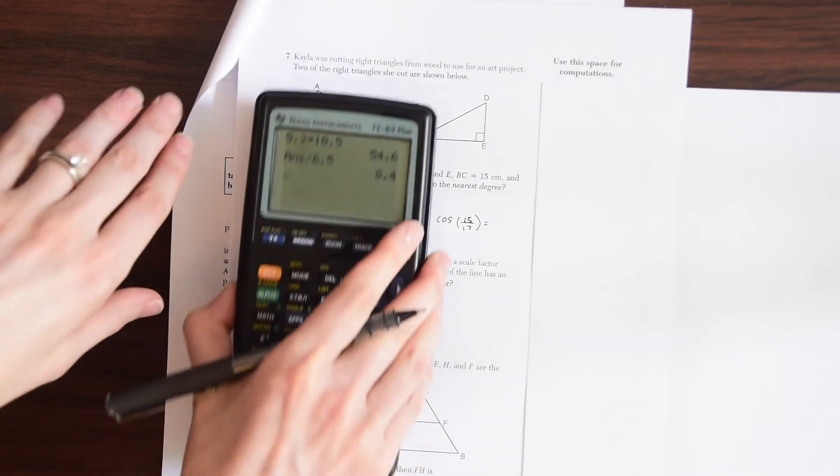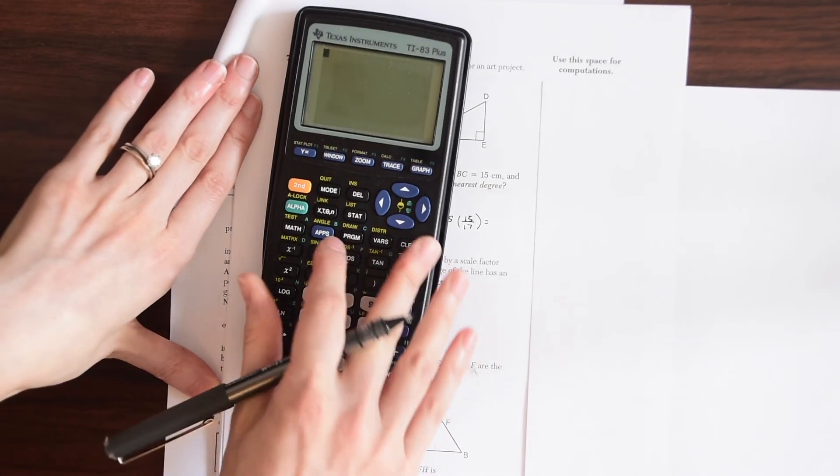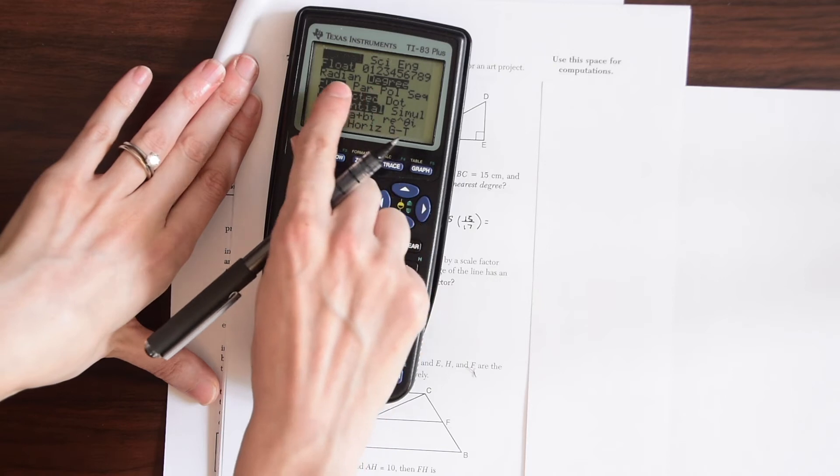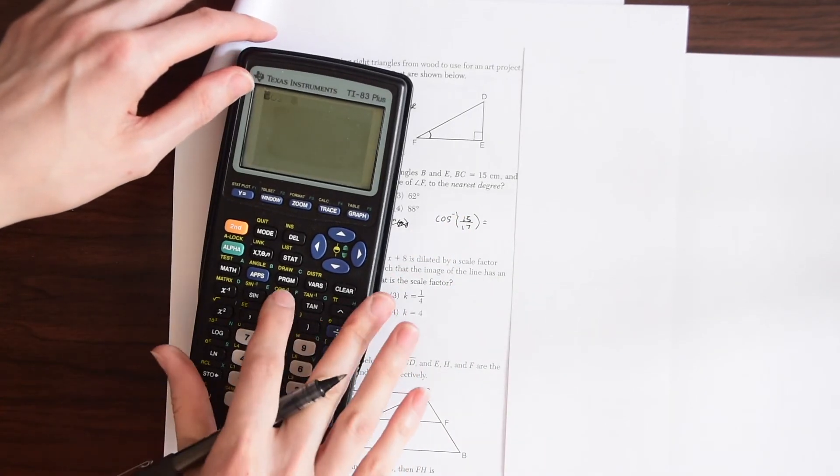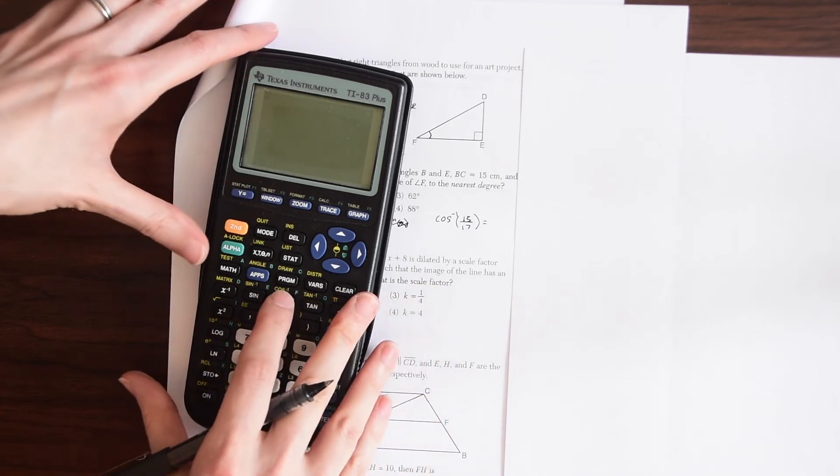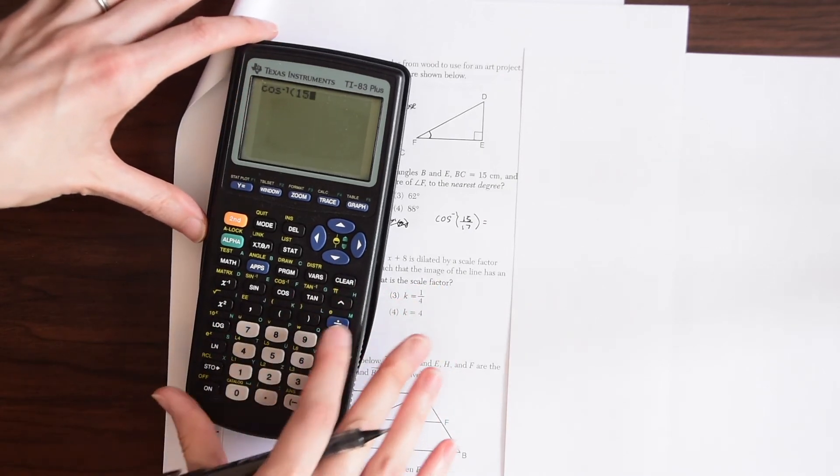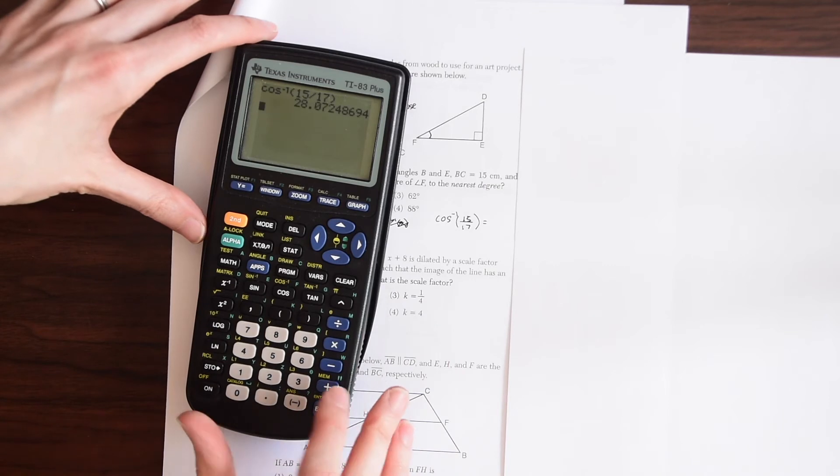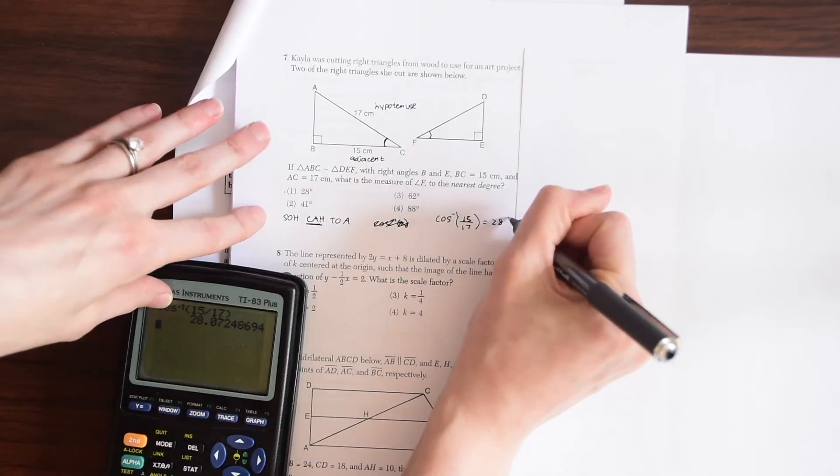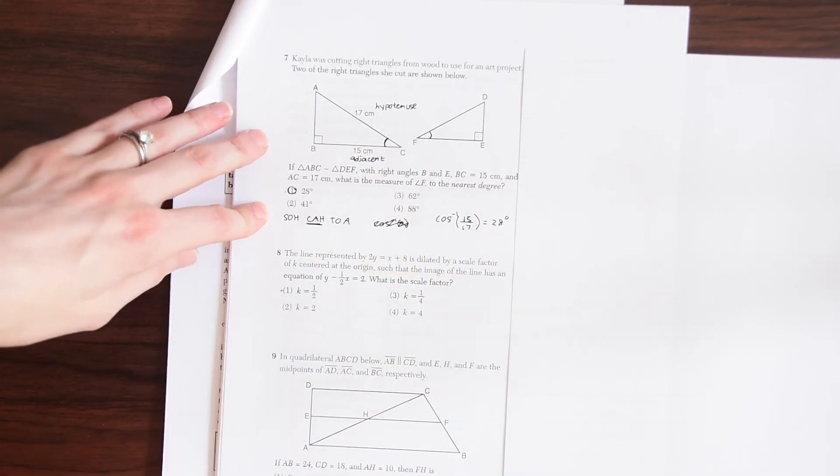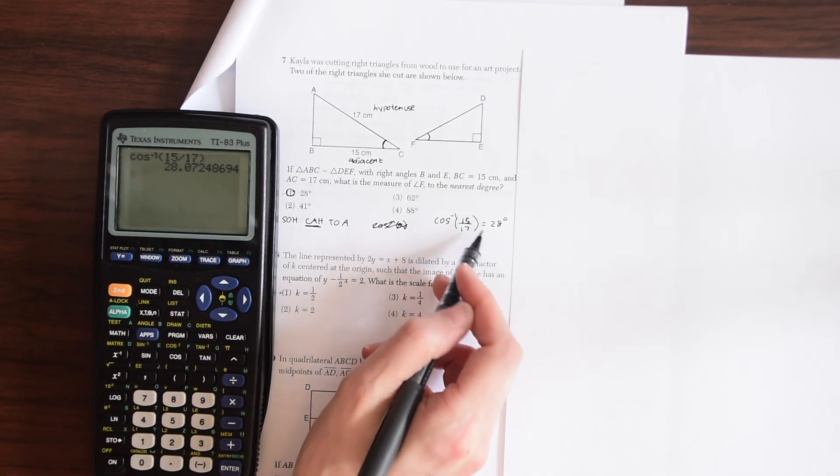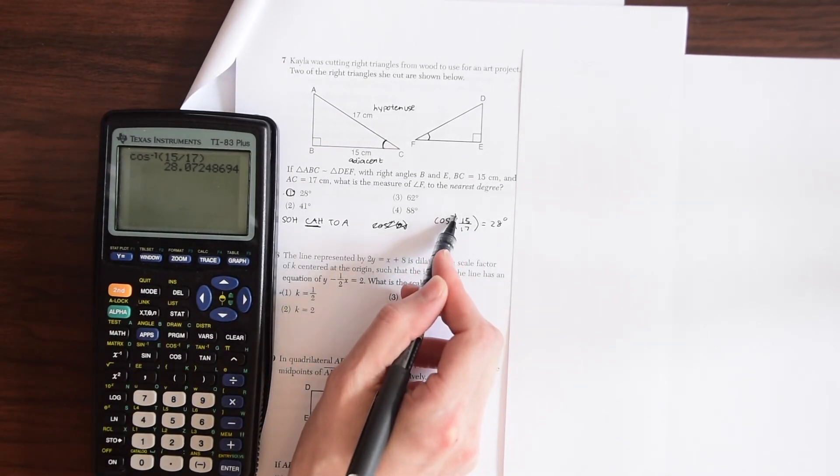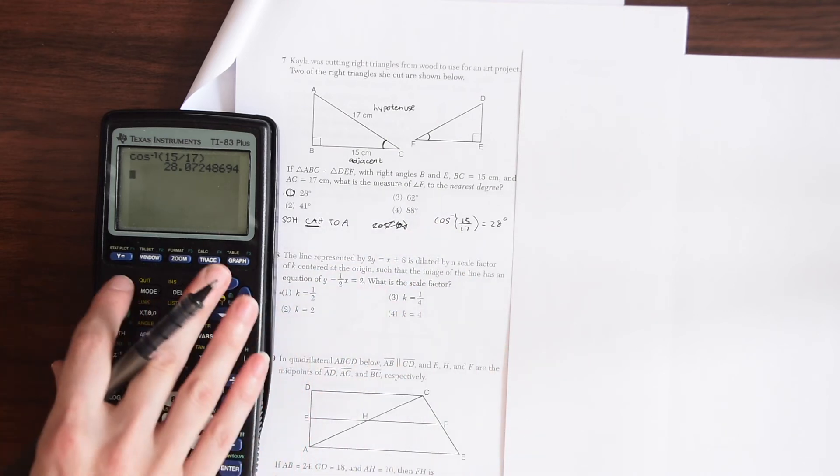So to get that, we're just going to take out our calculator and make sure you're in degree mode for this. So I went to mode and I'm in degree mode. So we're going to do cosine to the negative one. So we go second cosine 15 divided by 17. And this will give us 28 degrees. And that's our answer here. Because we don't have the value of the angle, which is what we're trying to find, we need to use this little minus one sign.